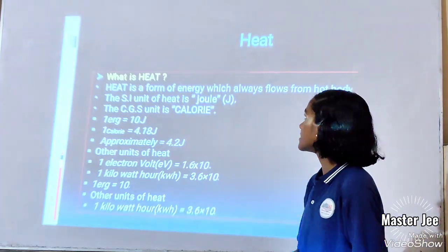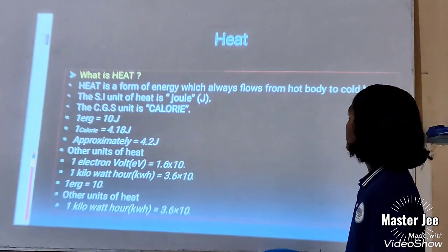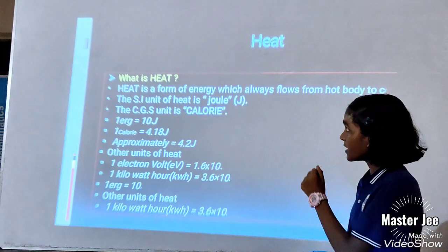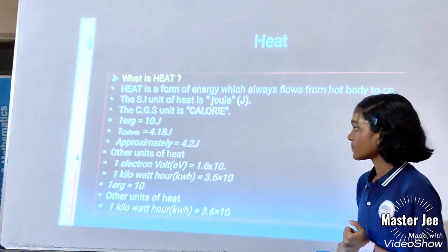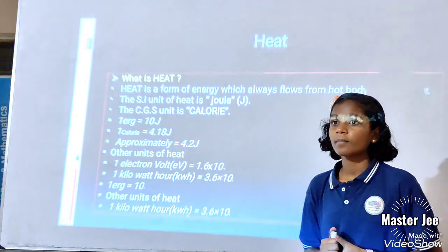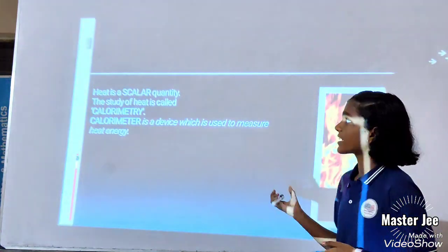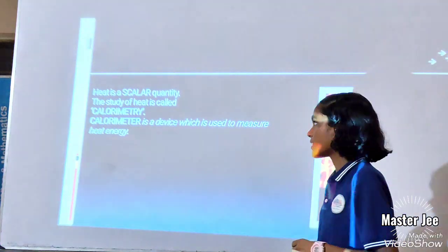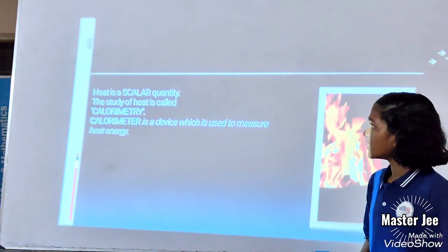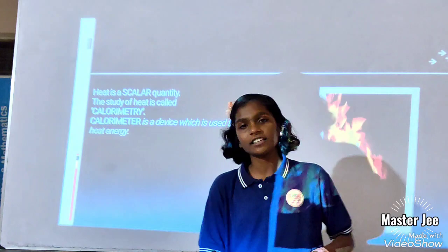What is heat? Heat is a form of energy which always flows from hot body to cold body. The SI unit of heat is joule. The CGS unit is calorie. Joules equals 4.18J. 1 kilocalorie equals 4.2KJ. Other units of heat: 1 kilocalorie equals 1.16 times 10 to the 16. 1 kilowatt hour equals 3.6 times 10 to the 10J. Heat is scalar energy. The study of heat is called calorimetry. Calorimeter is a device which is used to measure heat.